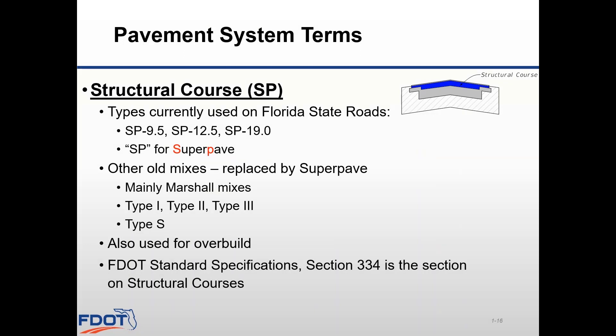Next, let's look at our structural course. We adopted the SuperPave mix design back in the 90s, and now the following structural courses are used by the department. Structural course type SP 9.5 uses a 9.5 mm or 3/8 of an inch nominal maximum size aggregate. Type SP 12.5 uses a 12.5 mm or 1/2 inch nominal maximum size aggregate. Type SP 19.0 uses a 19 mm or 3/4 of an inch nominal maximum size aggregate. The SP in the names of our structural courses indicates SuperPave. You may see some older mix types listed in pavement coring reports. Structural course is also used for areas of overbuild, and our standard specification section 334 covers SuperPave asphalt concrete.